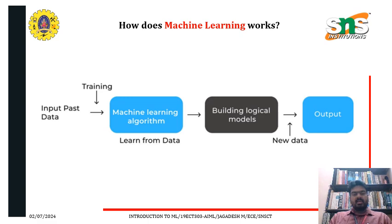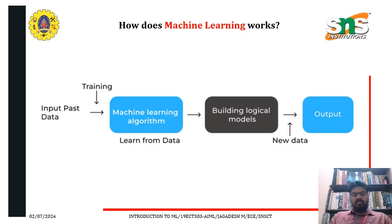How does machine learning work? We give some input data, and by using that data we train the machine. There are several algorithms to train the machine, and we build a logical model. The output produced from that model is how machine learning works.